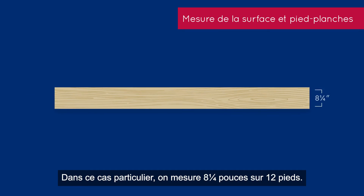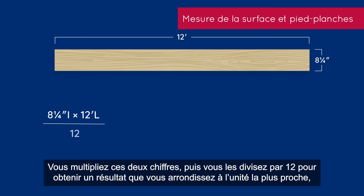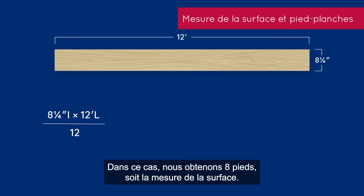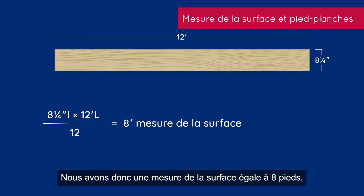In this particular case, it's 8¼ inches wide by 12 feet. You multiply those two numbers, then divide by 12, and you get a number that you round to the nearest whole number, either up or down. So in this case it gives you 8 feet — what we call surface measure. It could be considered square feet, but it's not really because we round it.